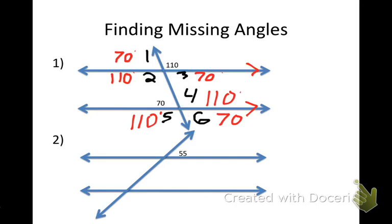They gave me two angles and I can find every other angle just knowing those postulates. I only need two things: corresponding angles and vertical angles, and I've got all of them.